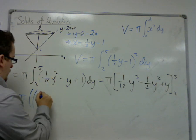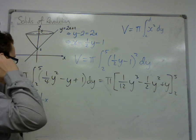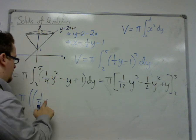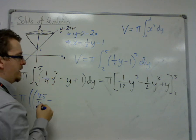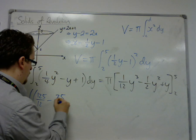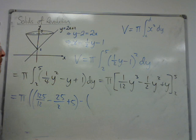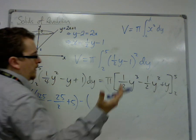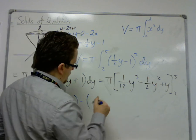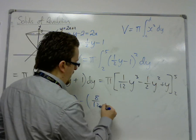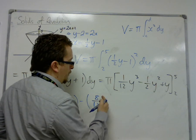So we have 1 twelfth of 5 cubed. So that's 125. So that's 125 over 12, take away 25 over 2 plus 5. Take away, now we're putting in 2. So we've got 8 over 12, which... well I'll just write it as 2 thirds.